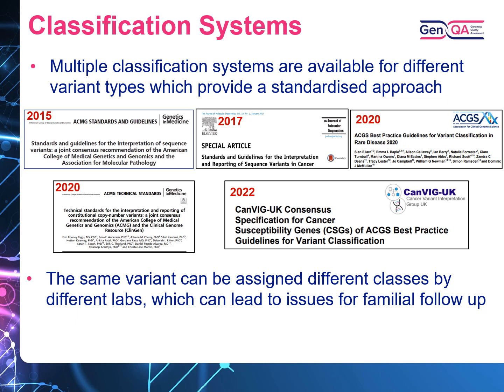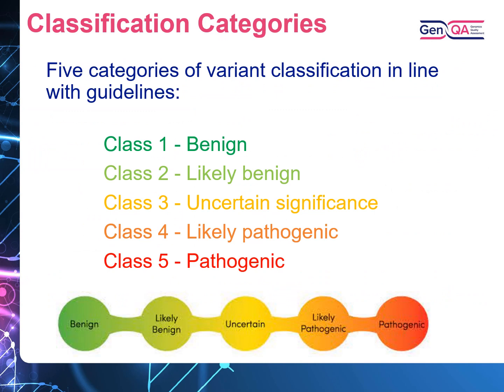The same variant can be assigned different classes by different laboratories, which can lead to issues for familial follow-up. In line with guidelines, there are five categories of variant classification. Class 1 is benign. Class 2 is likely benign. Class 3 is for variants of uncertain significance. Class 4 is likely pathogenic. And Class 5 is pathogenic.